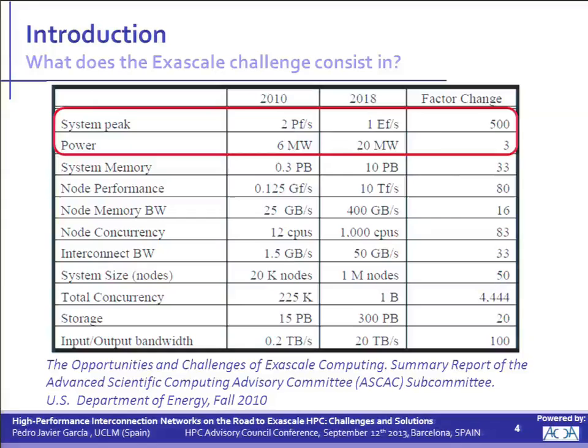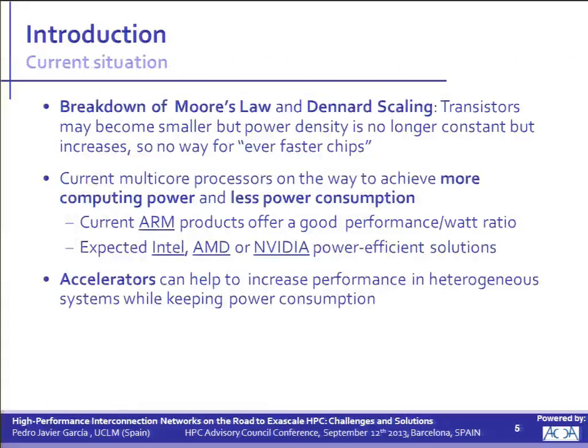At least power consumption shouldn't increase significantly. This table also allows us to imagine how far we are from reaching the goal, because it's possible to have some values from 2013 — the current year — about these metrics and compare them both with 2010 and with 2018. Are we going in the right direction regarding computational power and power consumption?